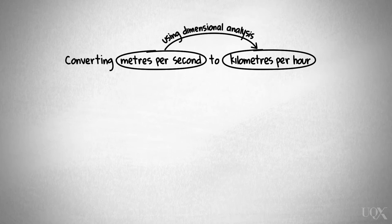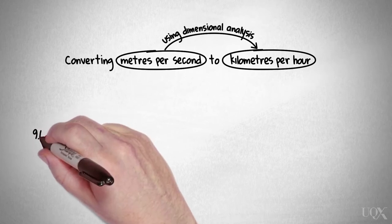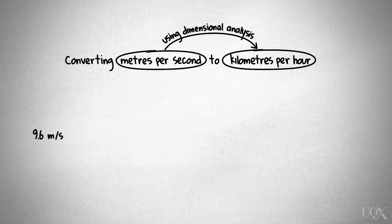Let's say a sprinter has an average speed of 9.6 metres per second. What would we need to do to convert this to kilometres per hour?